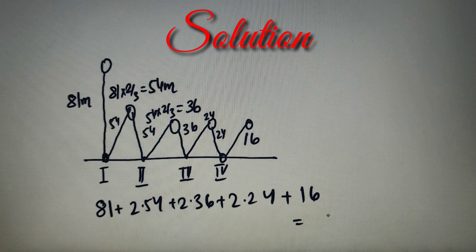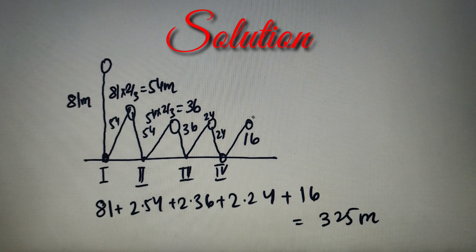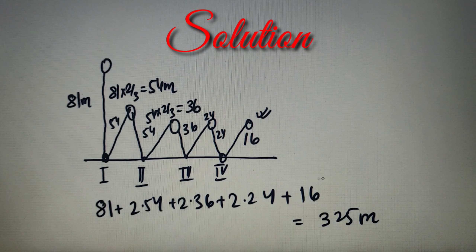Upon calculation, this total distance comes out as 325 meters. So when the ball strikes for the fourth time and reaches the maximum point, the total distance it has traveled is equal to 325 meters, which is the answer for Part A of the question.